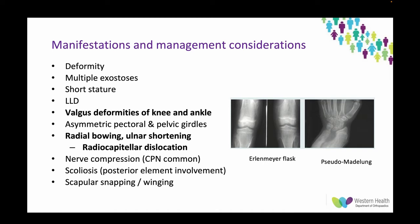Key manifestations: you'll get multiple lumps, bumps, and deformities. Short stature is common, as are limb length discrepancies. These patients typically have a lot of valgus — coxa valga, genu valgus, and ankle valgus. They can have asymmetric pectoral and pelvic girdles, and it's very common to see a scapular or rib osteochondroma leading to winging or snapping scapula syndrome. One area commonly screened for is a dislocated radial head due to ulnar shortening and radial bowing.